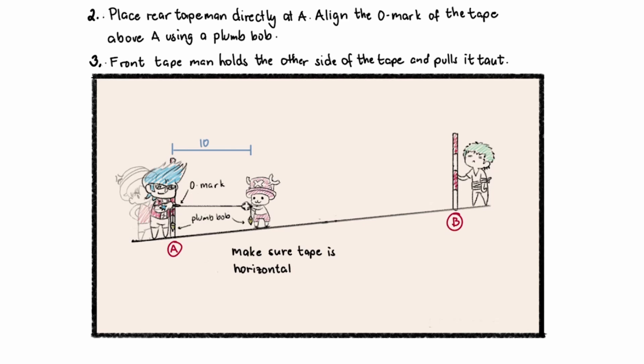In fieldwork two, the front tape man holds the zero mark. Here, the rear tape man holds the zero mark. So while holding the tape, they will use a plumb bob to make sure that they are positioning and aligning their tapes properly.